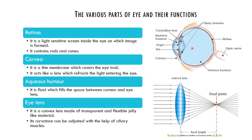Because of this convergence in the eye, whatever light falls on the cornea, after refraction it meets at the retina. Therefore, the image always forms on the retina. This is very important — always remember this. The curvature of the lens can be adjusted with the help of the ciliary muscles.